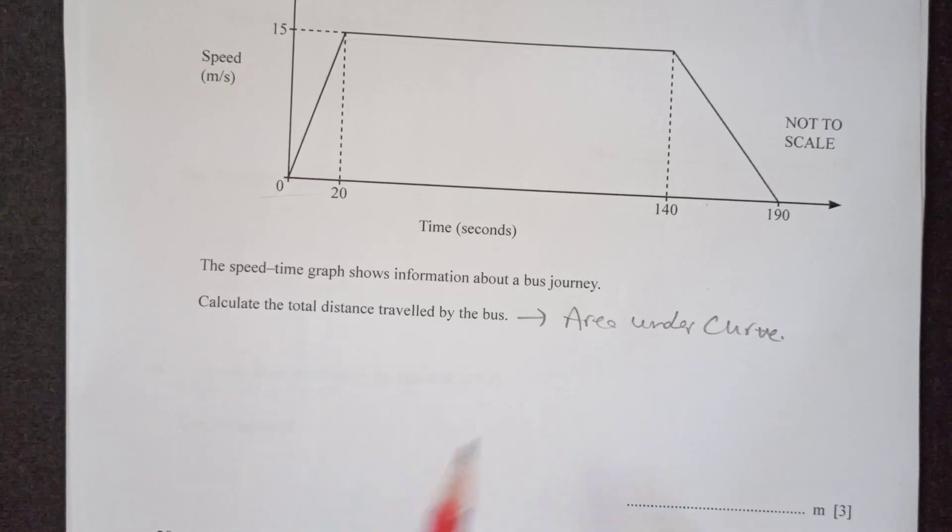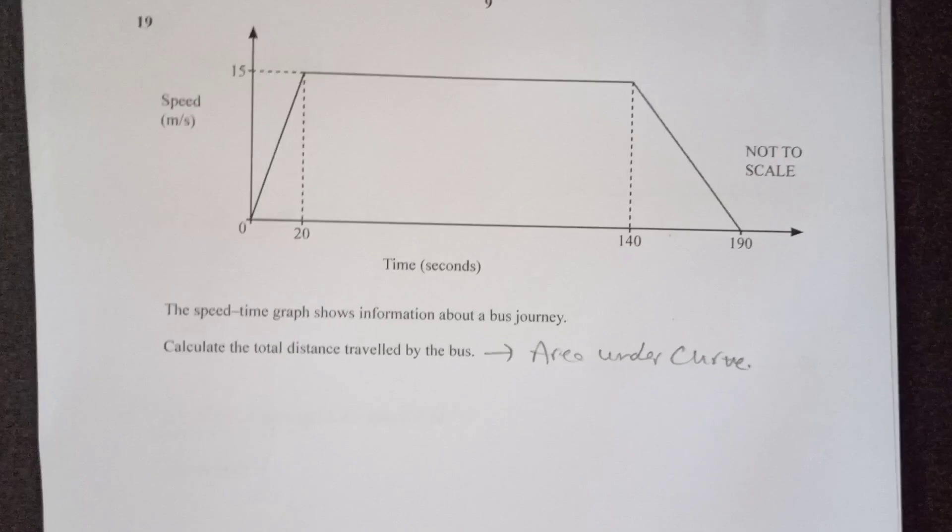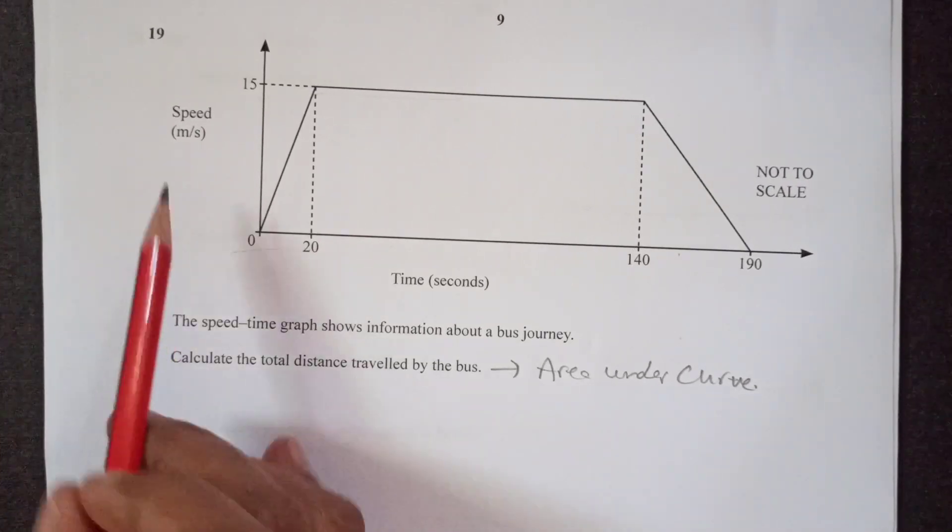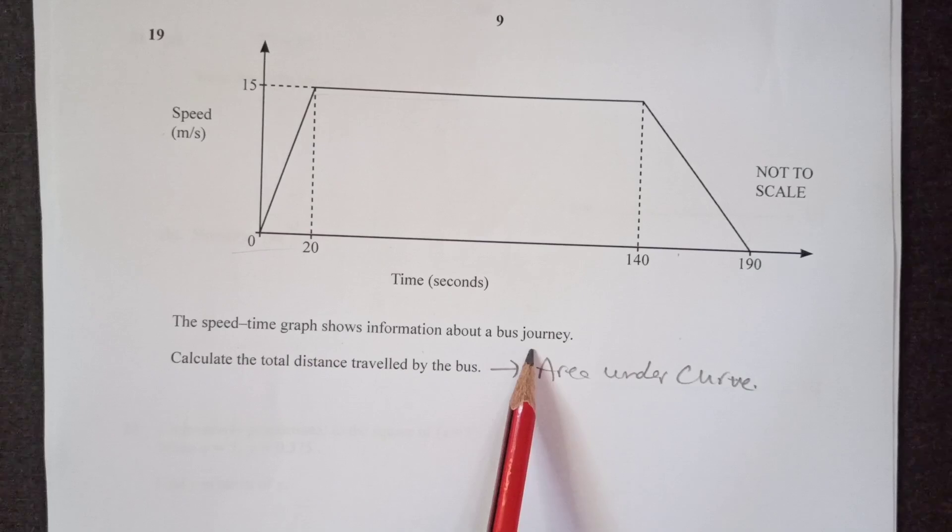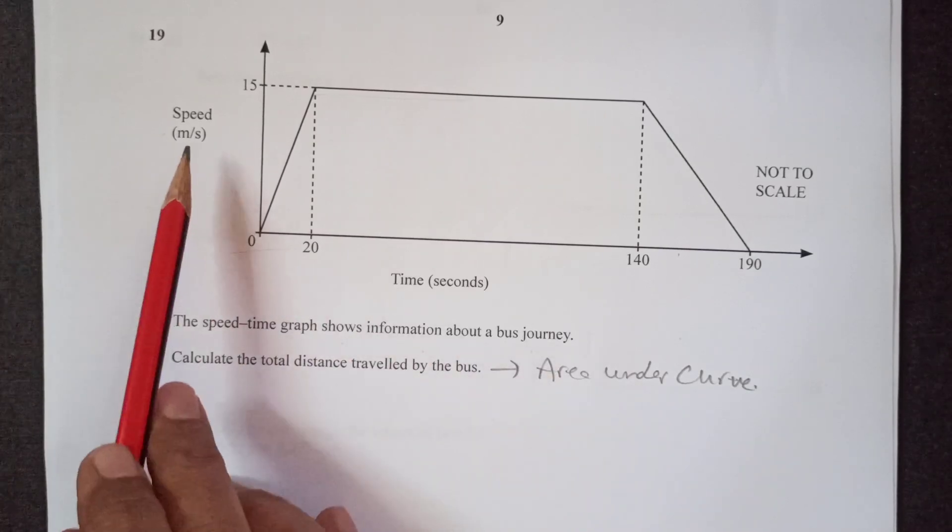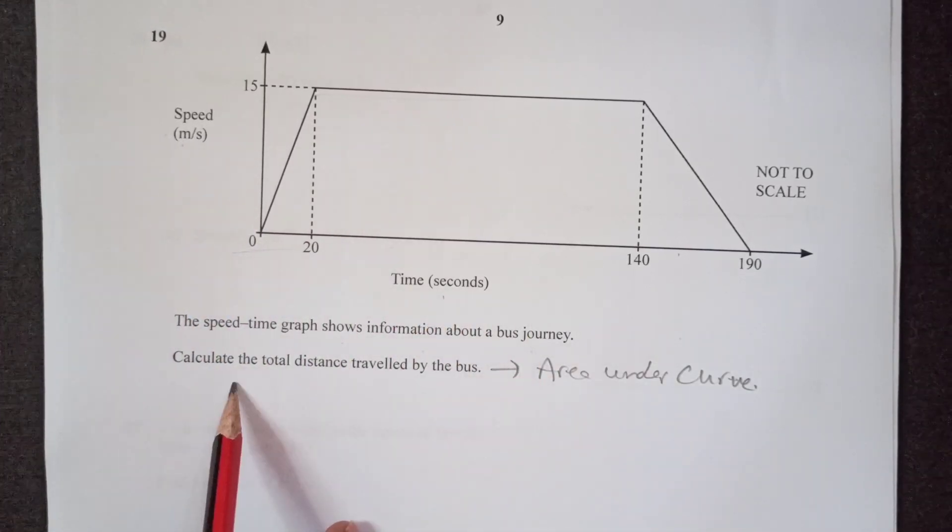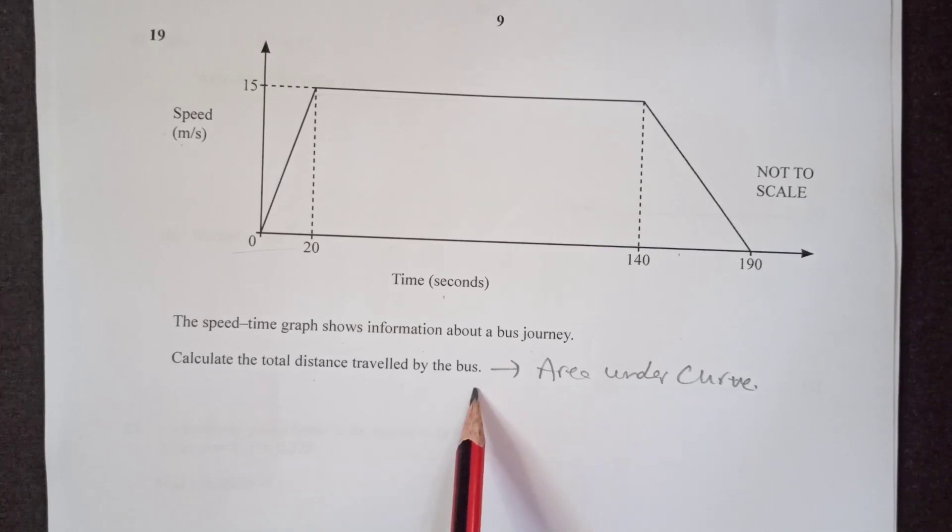Hello guys, welcome back to the channel. This is second part of Feb-March 2024 paper of IGCSE. So question 19 we have here, the speed time graph shows information about a bus journey. So we have speed here, we have time here. Calculate the total distance travelled by the bus.